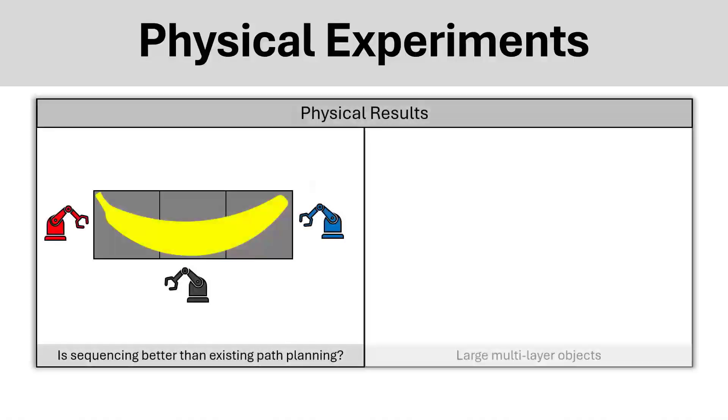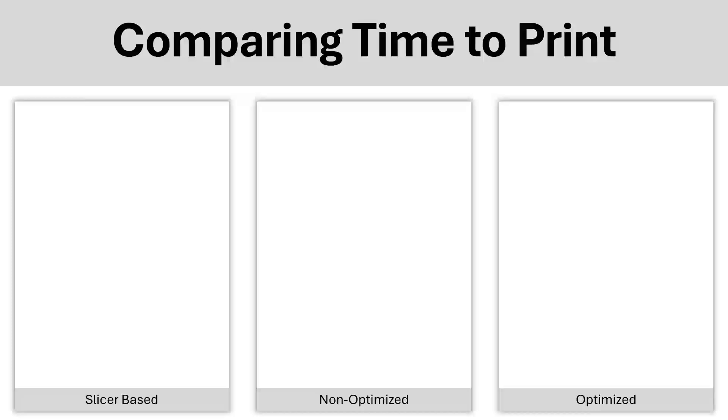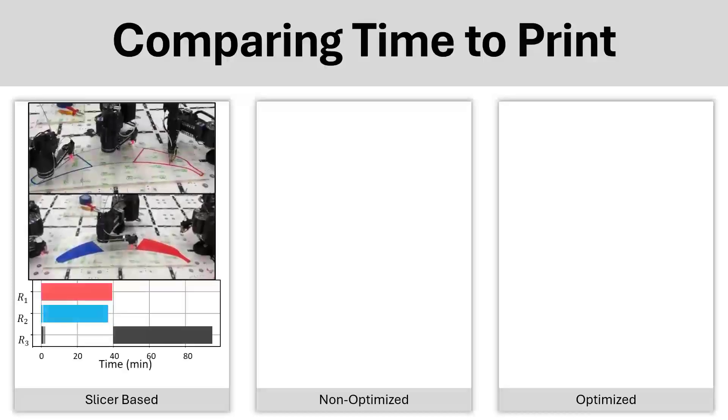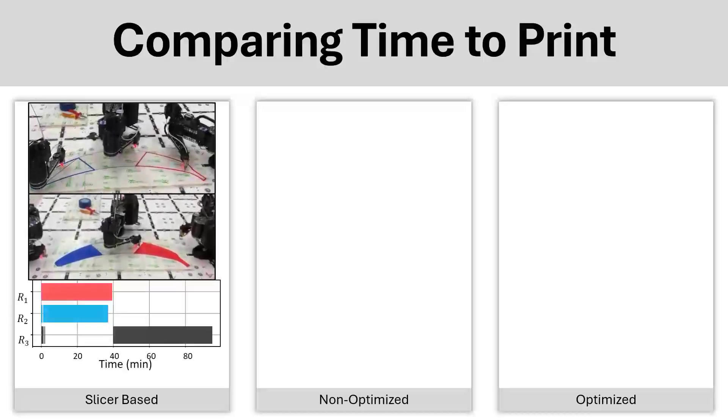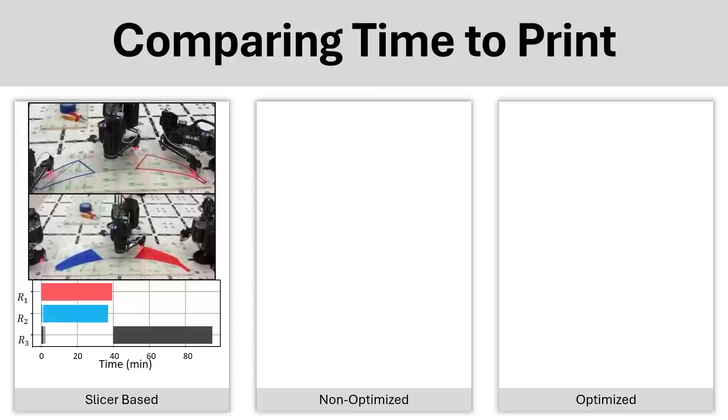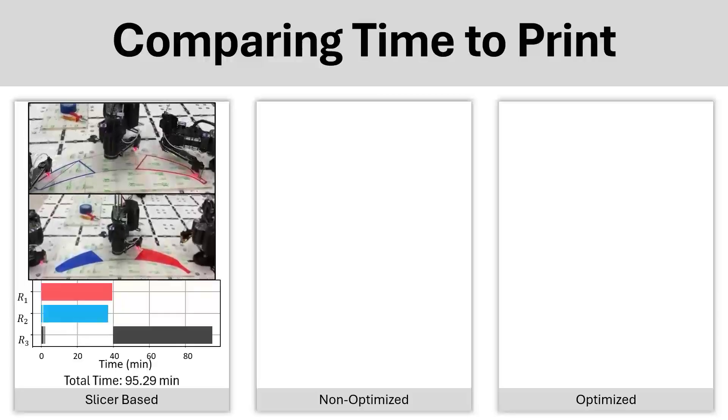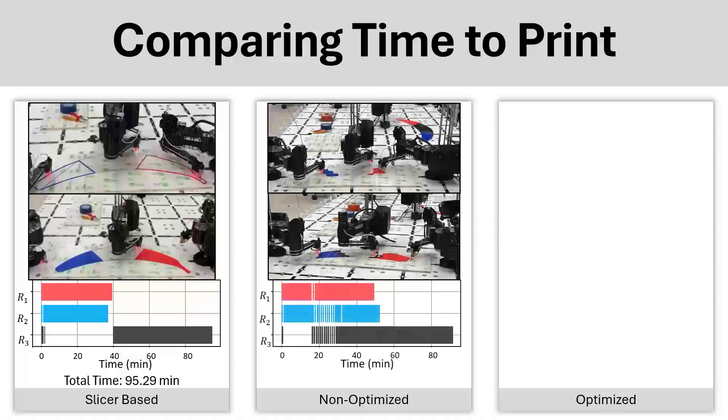We then demonstrate our approach using physical validation. Firstly, by printing a banana with a slicer-based approach, you can see there is very little collaboration between all three robots. The robots printing in red and blue primarily work together, and once they're finished, the robot printing in the middle, in black, finishes the work. We can also look at a cellularized, non-optimized approach, where we see that there is collaboration between three robots.